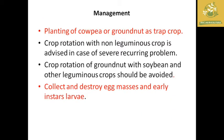For management of soybean pests: planting cowpea or groundnut as a trap crop can manage the pest naturally. Crop rotation with non-leguminous crops is advised in cases of severe recurring problems. Rotation of soybean with groundnut should be avoided, and rotation with other leguminous crops should also be avoided. Collection and destruction of egg masses and early instar larvae in the soybean field is also effective.